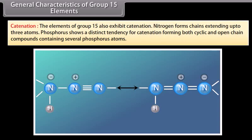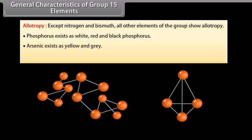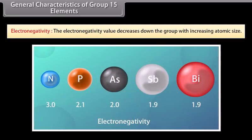The elements of group 15 also exhibit catenation. Nitrogen forms chains extending up to 3 atoms. Phosphorus shows a distinct tendency for catenation, forming both cyclic and open chain compounds containing several phosphorus atoms. Except nitrogen and bismuth, all other elements of the group show allotropy. Phosphorus exists as white, red and black forms. Arsenic and antimony each exist as yellow and grey forms. The electronegativity value decreases down the group with increasing atomic size.